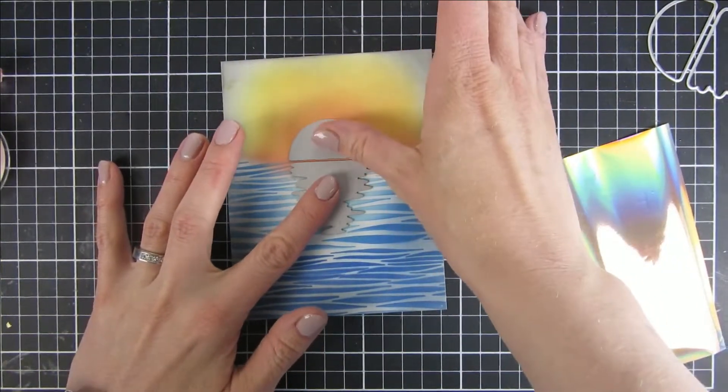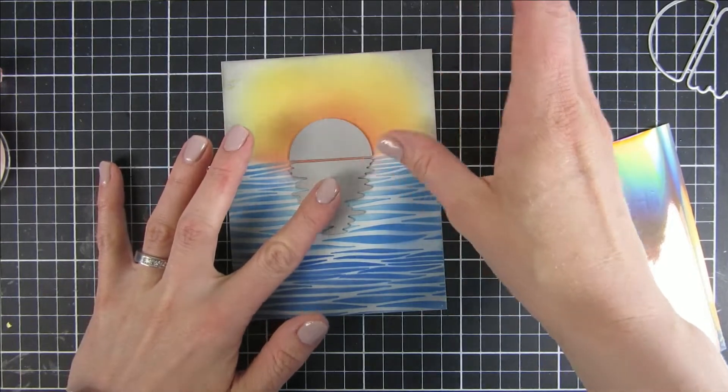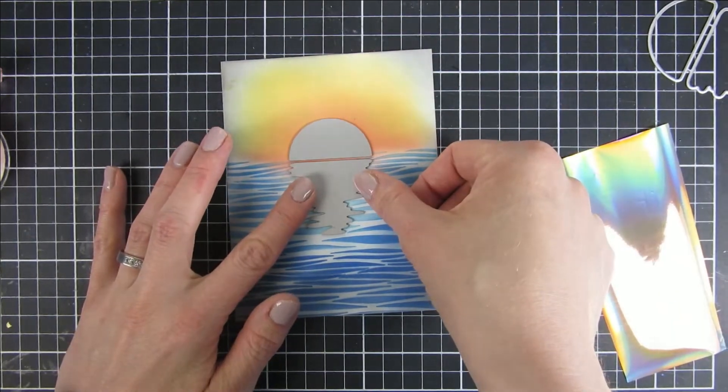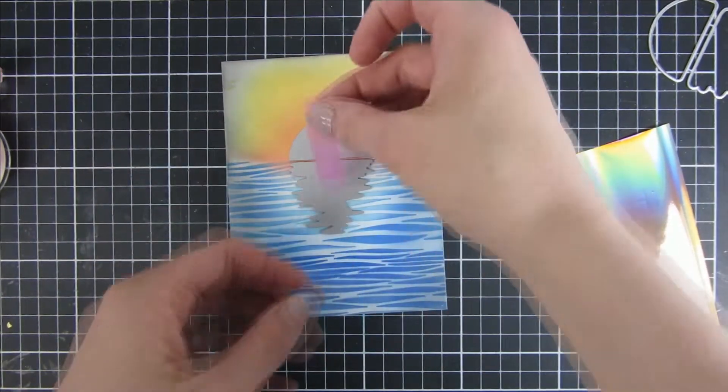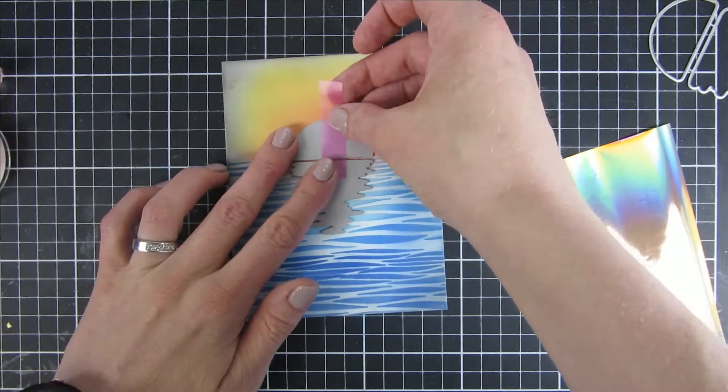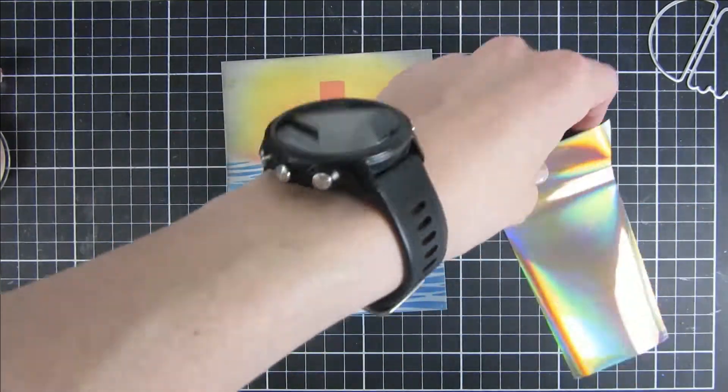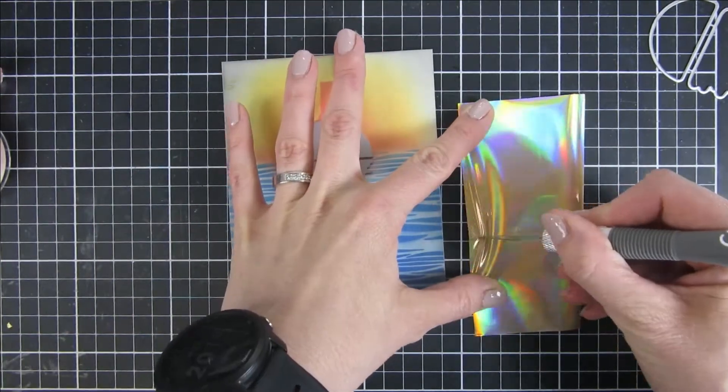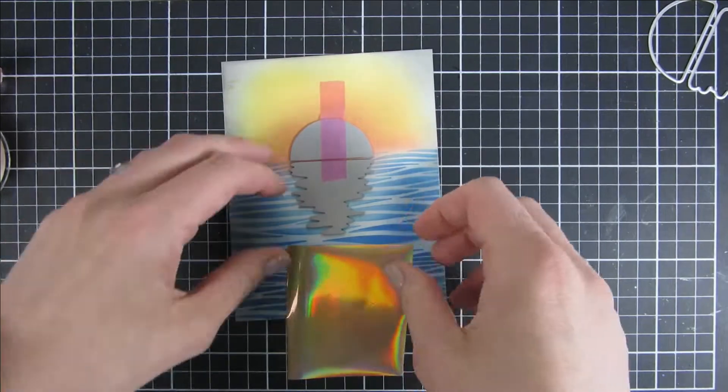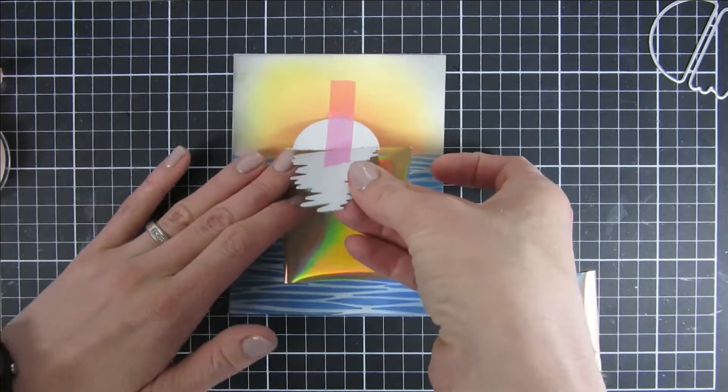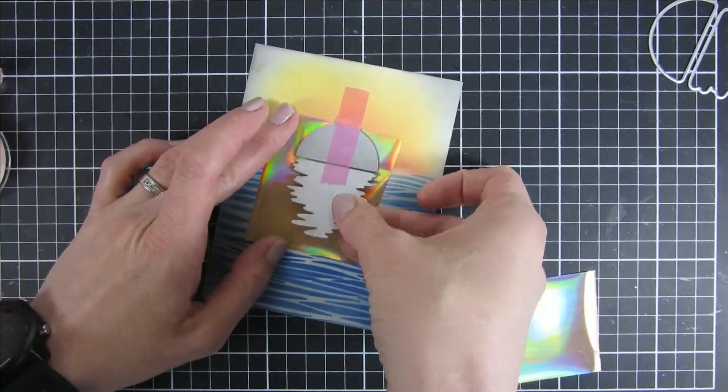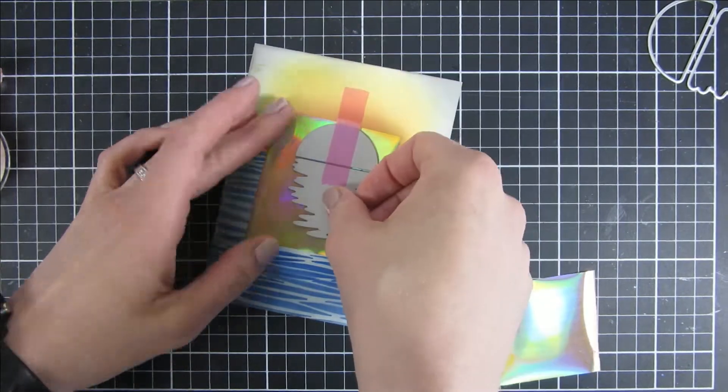Then we will do our hot foiling and I probably should have mentioned this in the beginning but I used a really smooth cardstock from Spellbinders. This is meant for hot foiling and if you have trouble ink blending I promise you you will not be disappointed with this cardstock because it's perfect for that as well.